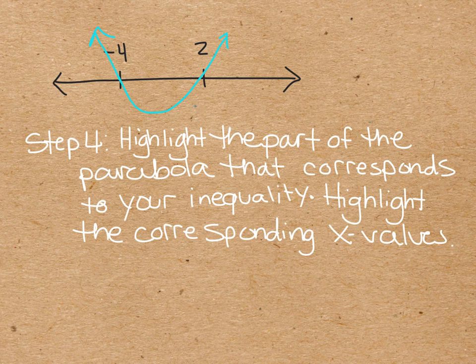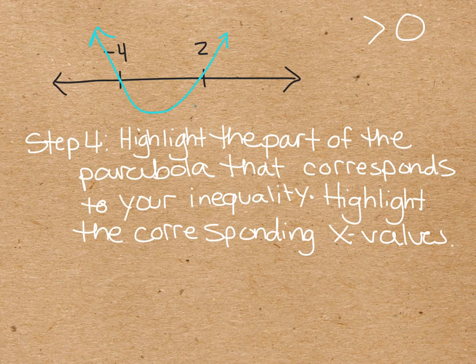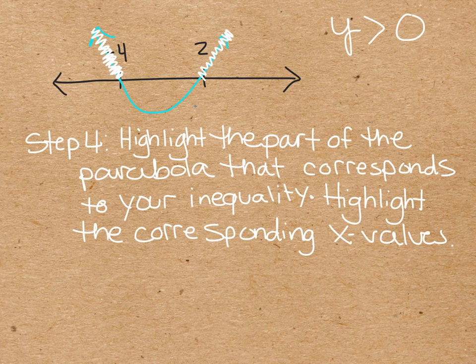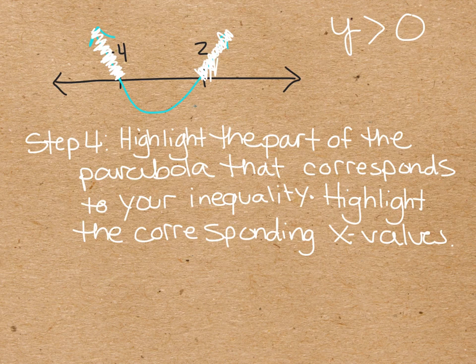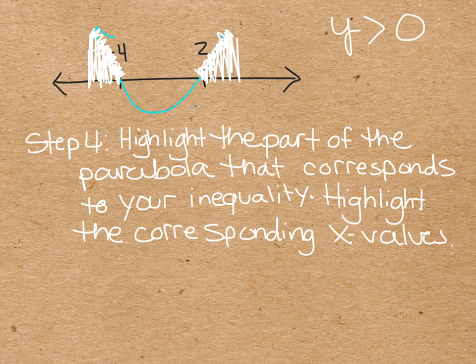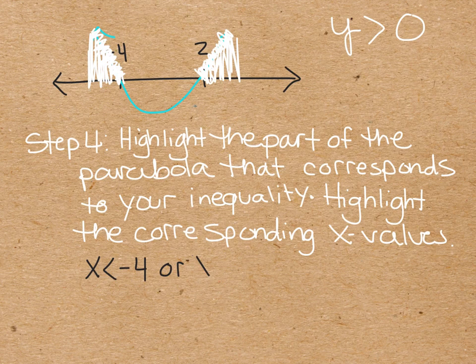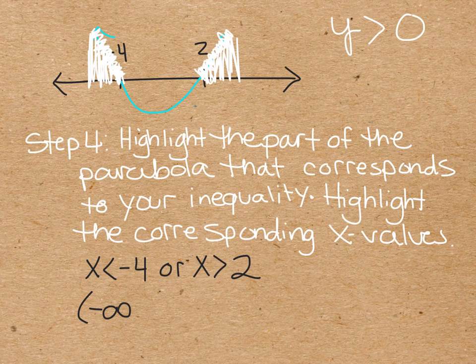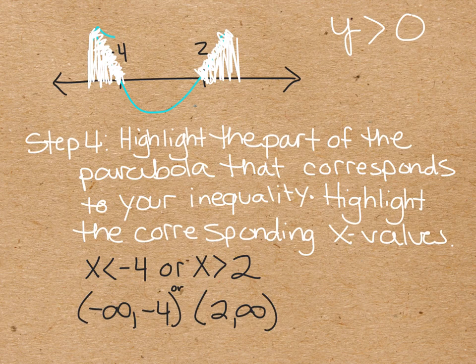So that we can then do step 4. All right. So now we're going to highlight the part of the parabola that corresponds to our inequality. Our original inequality said greater than 0. Remember, this is your y. Where is your y value greater than 0? It's up here and up here. So we want to know what x's make our y's positive. So then you highlight the corresponding x values, which all you have to do is take it down, right? These are our x values that give us the positive part of the parabola. So then when you answer the question, we could say x is less than negative 4 or x is greater than 2. You could also put it in interval notation. I actually like that better. Negative infinity to negative 4, soft bracket, and 2 to infinity, soft brackets. So either way that you put it, it's fine. Inequality or interval.